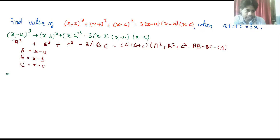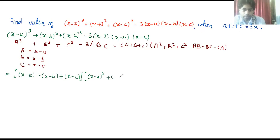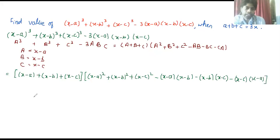Substituting the values: capital A is x minus a, capital B is x minus b, and capital C is x minus c. So the first part, A plus B plus C, becomes (x minus a) plus (x minus b) plus (x minus c). The second part gives us (x minus a)² plus (x minus b)² plus (x minus c)² minus (x minus a)(x minus b) minus (x minus b)(x minus c) minus (x minus c)(x minus a).